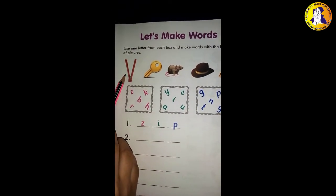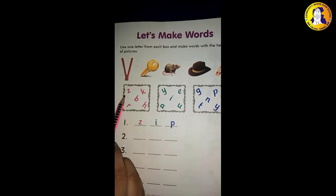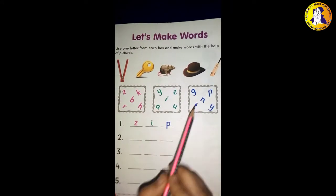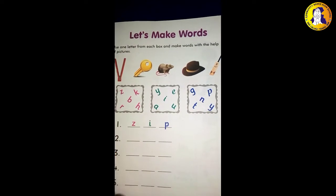The first picture is zip. In the box we have what is Z, then I and P. What is zip? Now we are doing the other one.